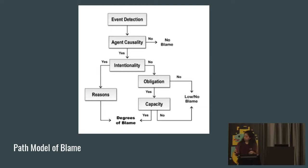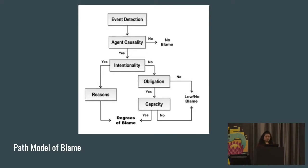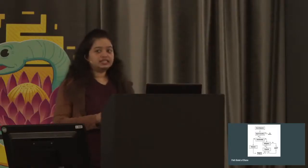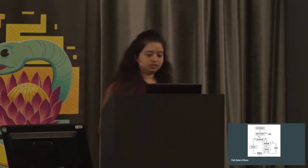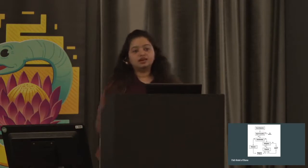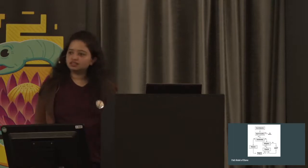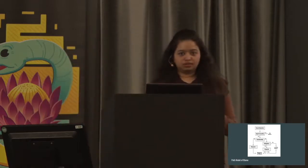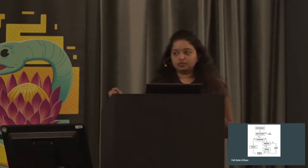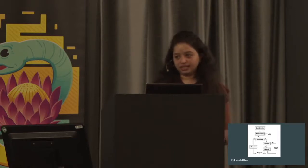There are existing steps to the path model of blame. It starts at event detection — from an article or message, you can extract certain events and cluster them as individual events. If that event shows that an agent or entity has been acting so that this event occurred, there is a possibility this is propaganda. If the agent is something like a natural disaster, it's not going to be propaganda. But if it is an organisation, a community, or an individual, then there are chances that the text is propaganda.